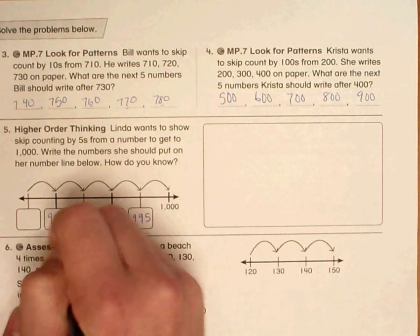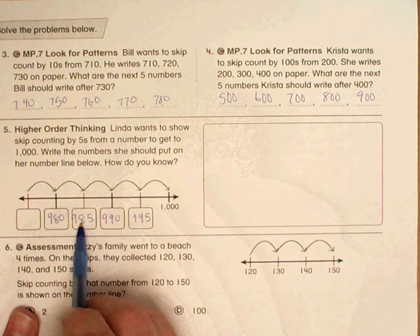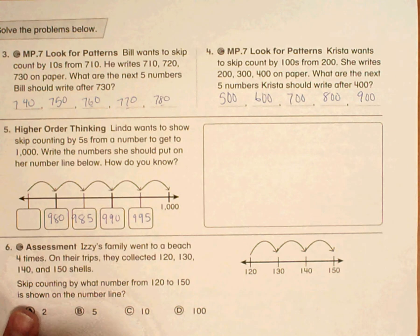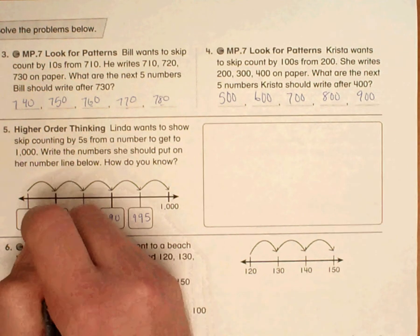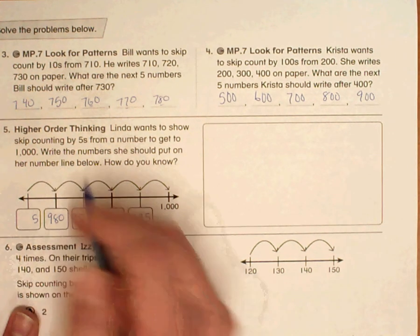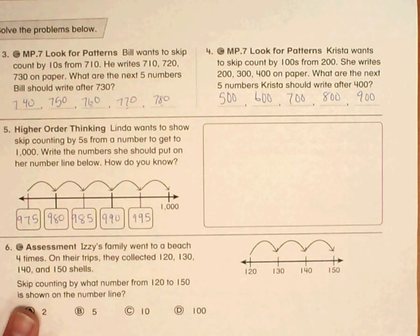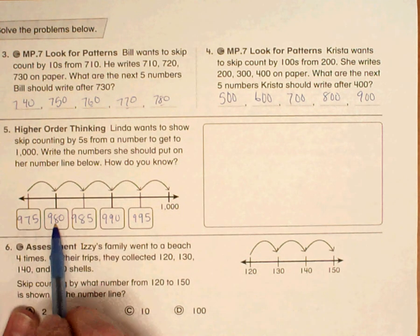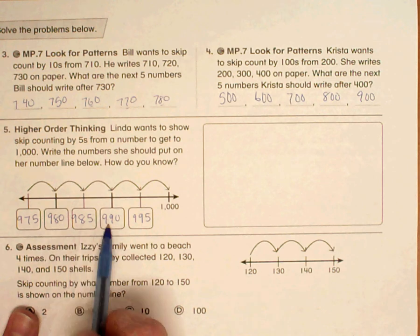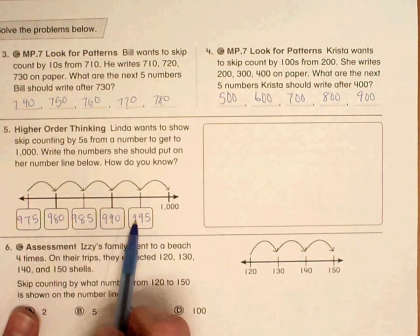So 980 would be 985 minus 5, and then subtract 5 from 980. That 1's place will be a 5. I have to bring that 10's place down 1, and the 100's place will remain the same. So 975, 980, 985, 990, 995, 1,000.